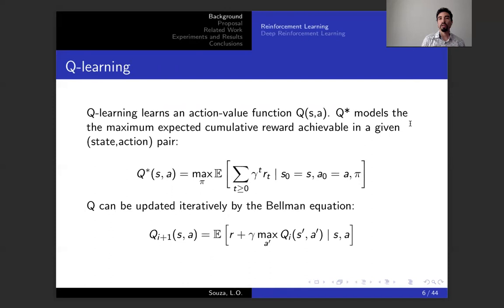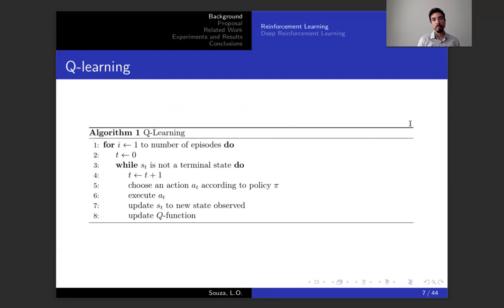Talking about Q-learning. In Q-learning, you try to learn an action value function and you're going to derive your optimal policy based on that learned action value function. The algorithm is very simple. You loop through a number of episodes and at each episode, while you don't reach a terminal state, you choose an action according to a policy pi based on your current action value function. You execute that action and then you update your state to the new state observed. You update your Q function based on the reward you perceive from the environment. So you get the difference between the reward you expected to receive and the reward you perceive and you update your function based on that.